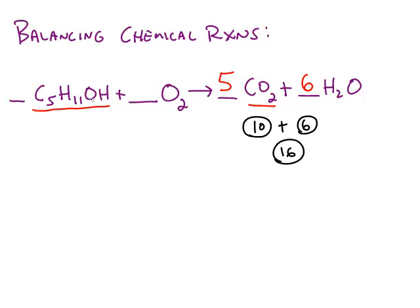On the reactant side, I have an oxygen in the first chemical and I have oxygen in O₂. I can't change the first chemical's coefficient without throwing the balance of the carbon and the hydrogen off. So this one oxygen is going to stay, which means I need 15 more oxygen from O₂ to make my total 16 on both sides.